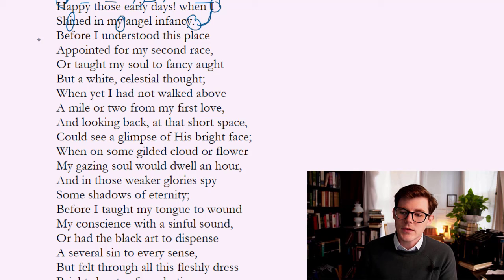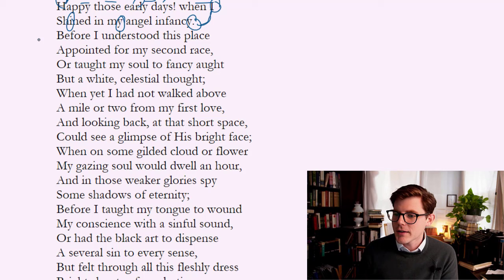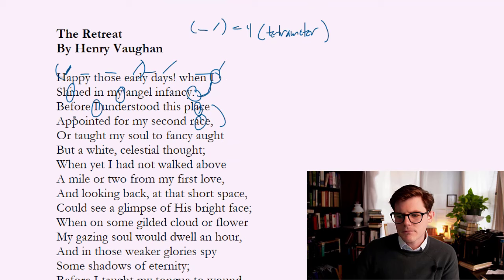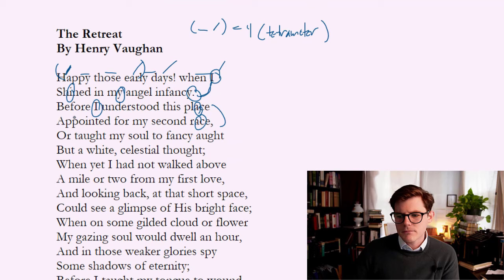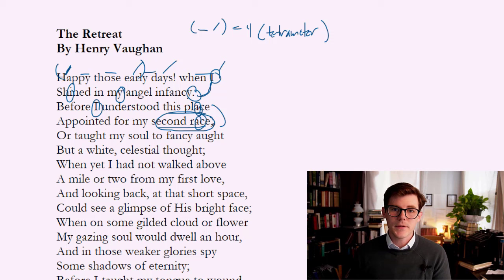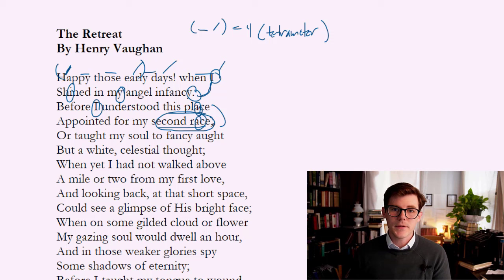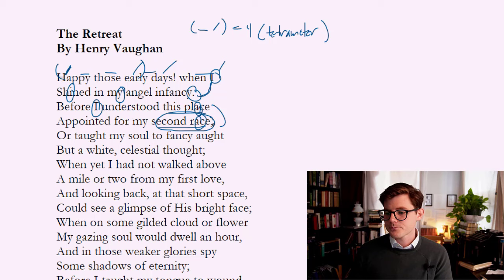'Before I understood this place appointed for my second race, or ought my soul to fancy ought but a white celestial thought.' That tetrameter carries us along, chiming with the long i's and long a's. This happy state, these early days, are described as a time when he did not understand 'this place' — perhaps the world — 'appointed for my second race.' This concept of the second race is interesting and obscure. According to Neoplatonic and some Hermetic philosophy, there's the idea of the pre-existence of the soul, that the human soul existed before it was placed into the body and into the world.